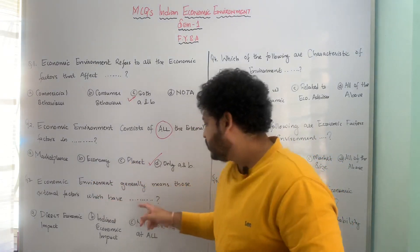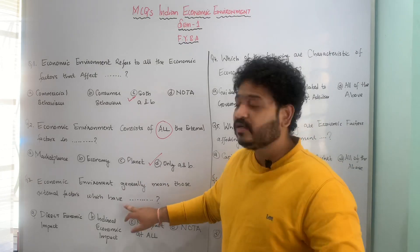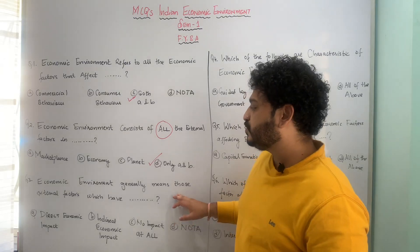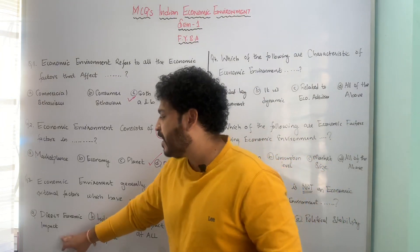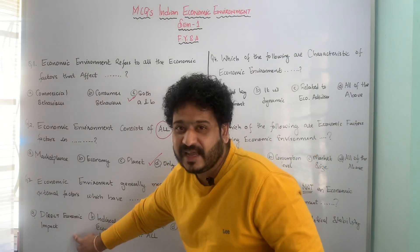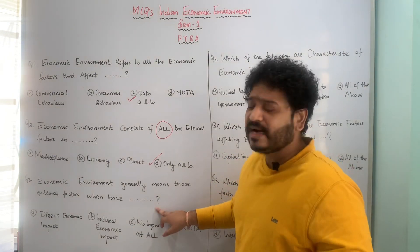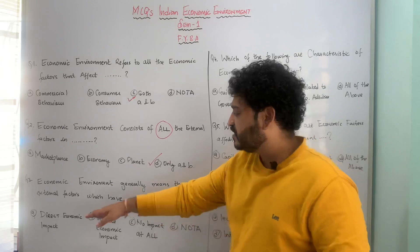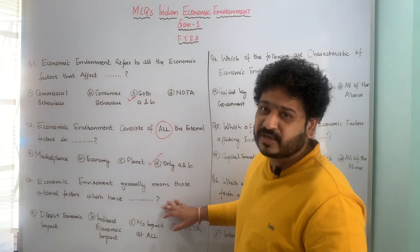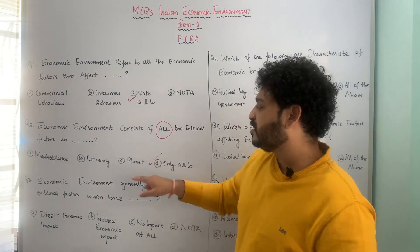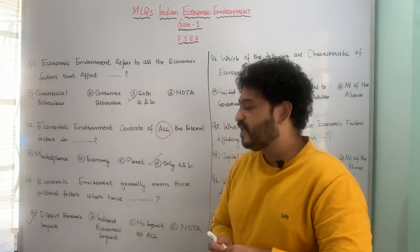The third MCQ: economic environment generally means those external factors which have — A: direct impact, B and others with no impact. The correct answer is option A — direct economic impact — meaning those external factors which have direct economic impact.